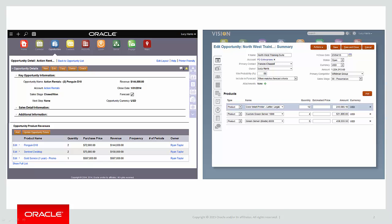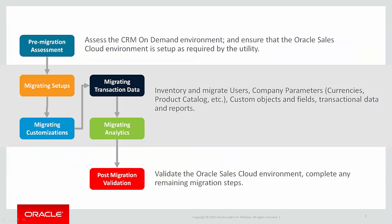The goal of this utility is to make migrations much faster and much more accurate by automating parts of the overall migration process. The utility is a key part of the overall migration process and augments any methodology being used. Customers gain a faster and more accurate migration, and partners are able to streamline the overall effort, allocate resources to value-added services, and avoid the tedium of creating fields and objects manually.